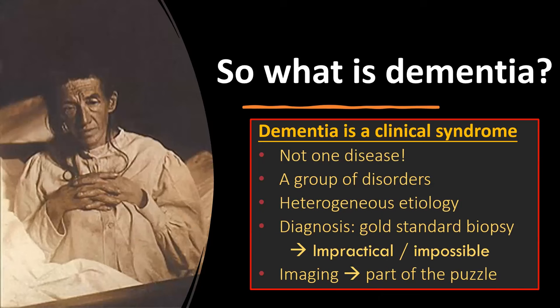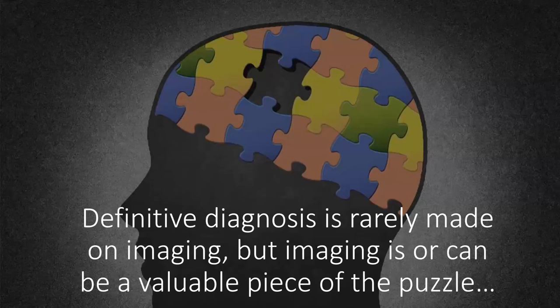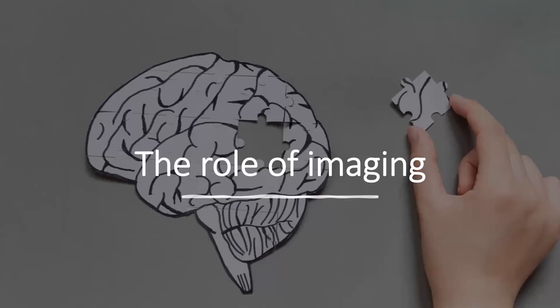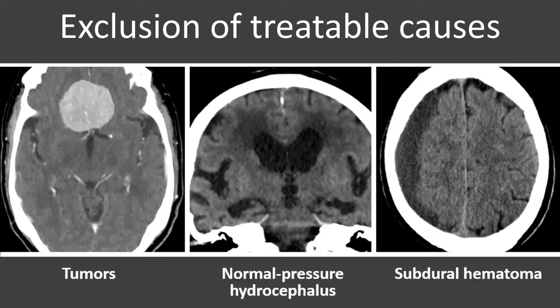Dementia is a syndrome — not one disease — a group of heterogeneous disorders. Exact diagnosis relies on biopsy, which is impossible, so we rely on multiple investigations including imaging. I always tell my residents: be careful before saying 'this is compatible with Alzheimer's disease.' Just point out if it's normal or abnormal — if you do that, you've already done a lot for your referring neurologist.